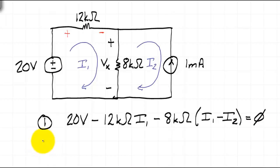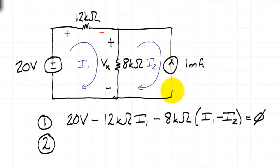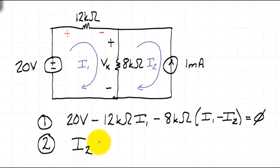Looking at the second loop, we have a voltage indicated across the 8kΩ resistor — the same voltage across the 1mA current source. However, we do not have an equation that governs the voltage across the current source, so we cannot write a KVL equation that will help us. In this case, I2 is the only mesh current that interacts with the 1mA source. I2 goes in the opposite direction as the source, so for the second equation we can write I2 equals negative 1mA.